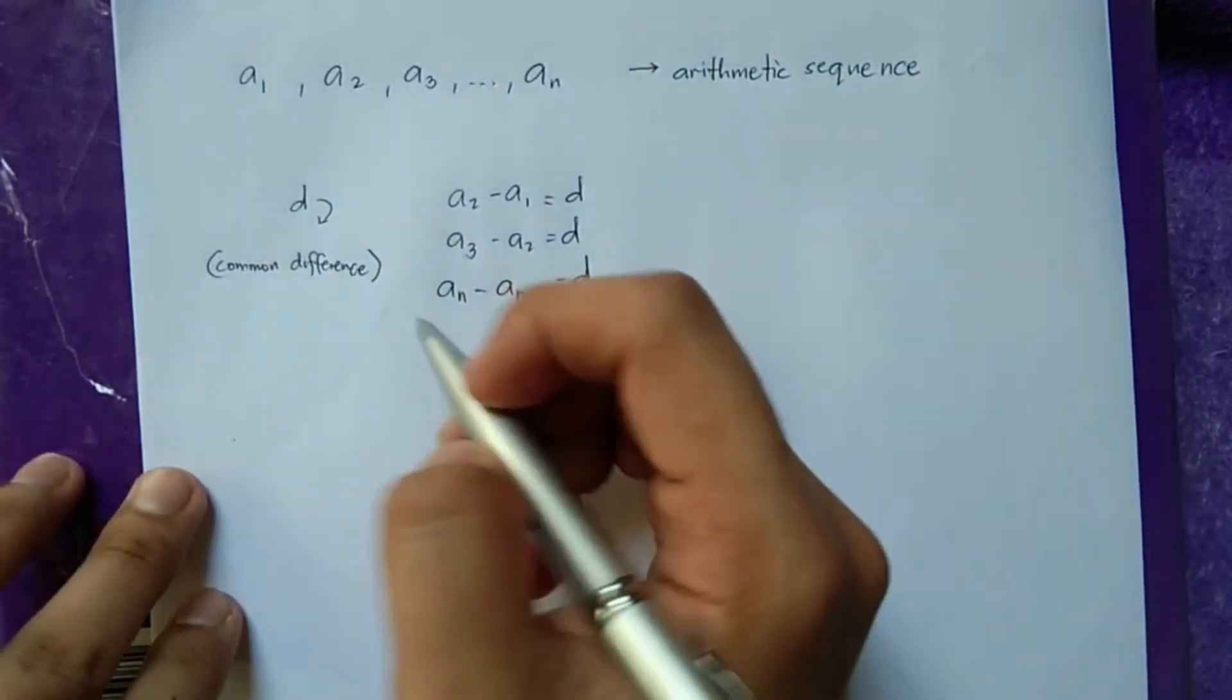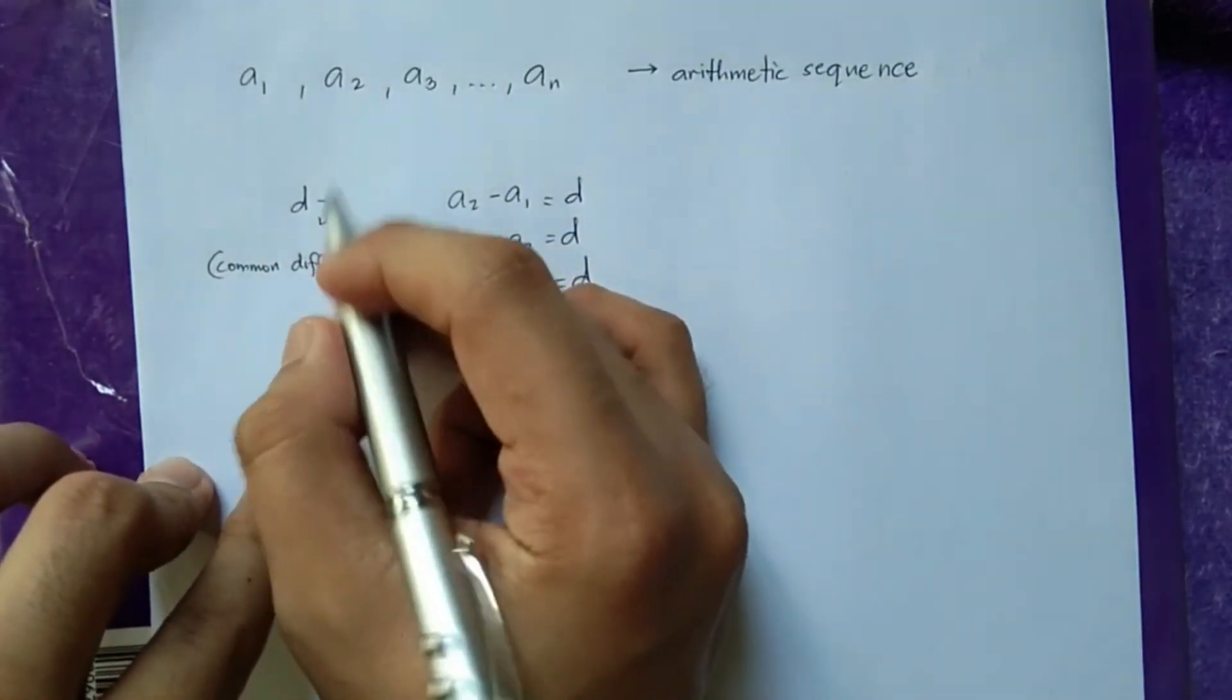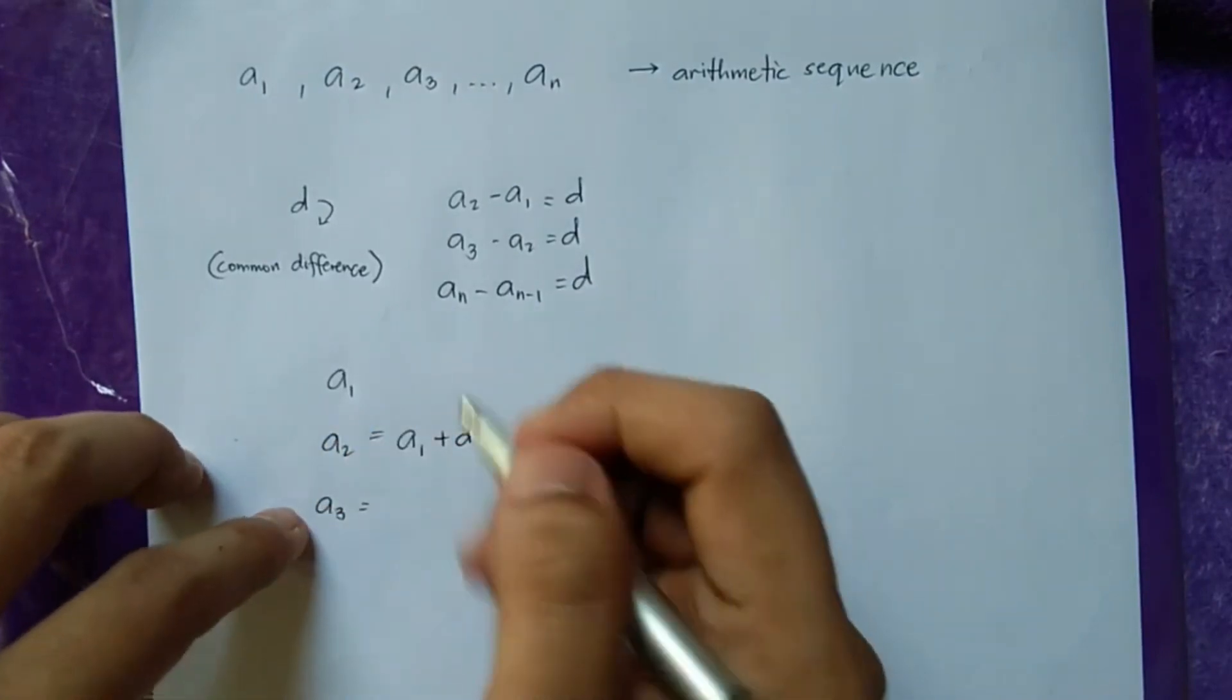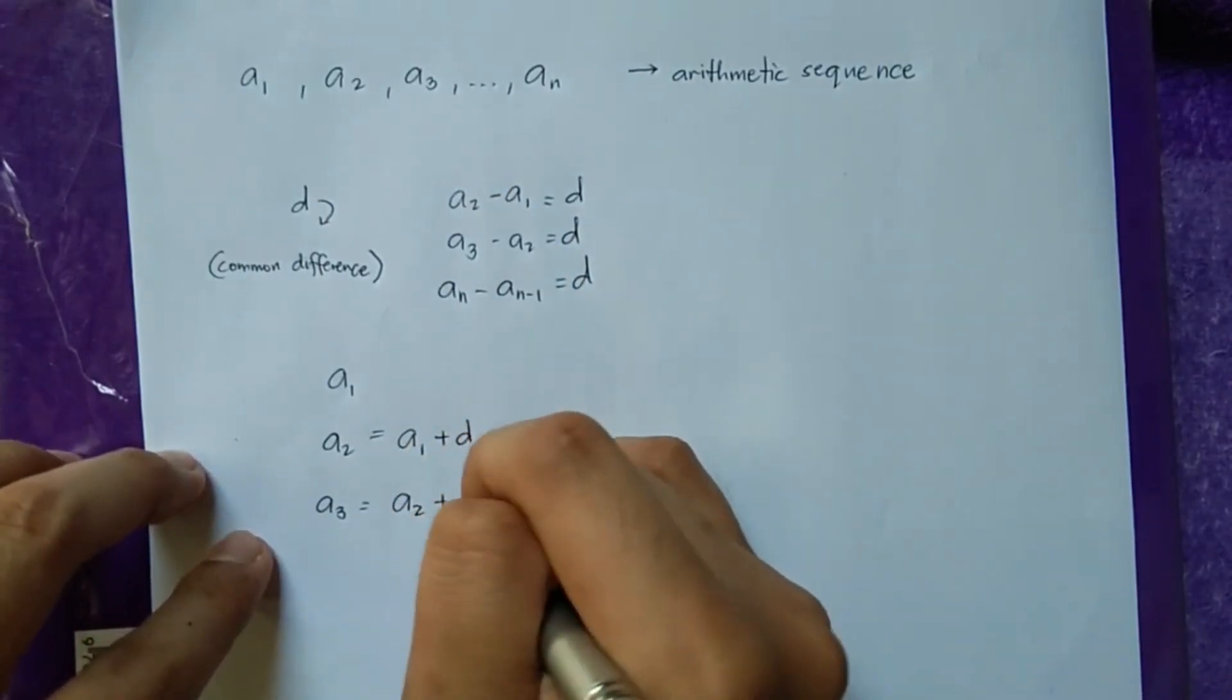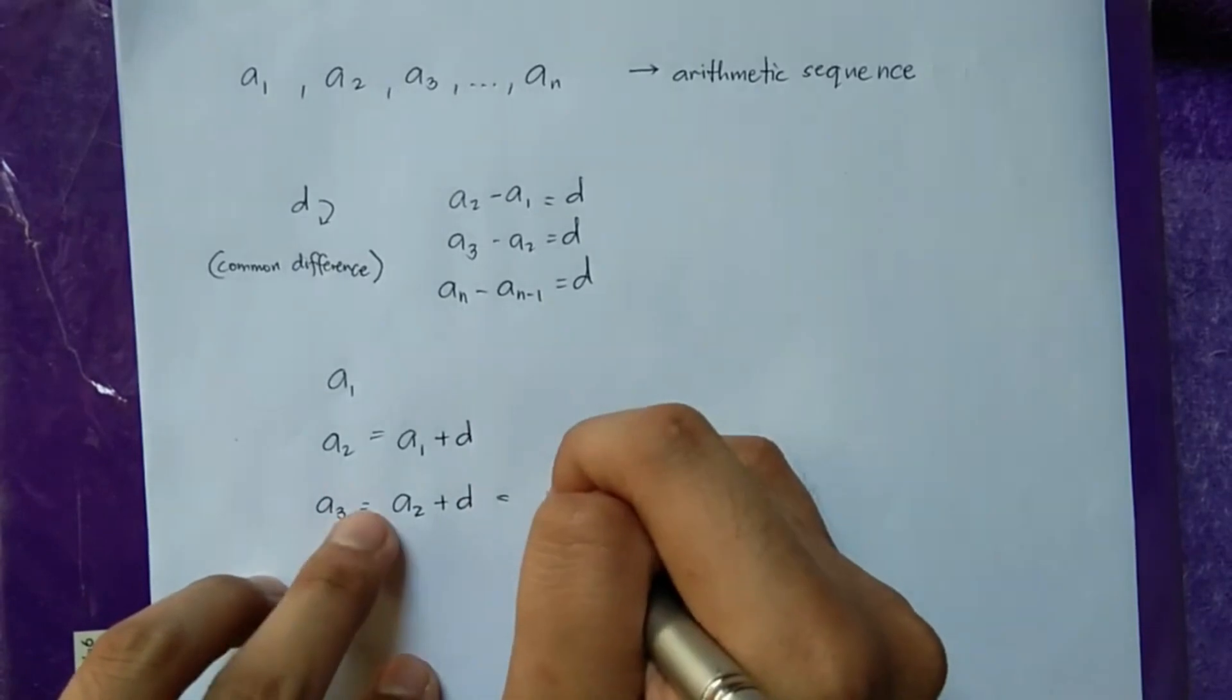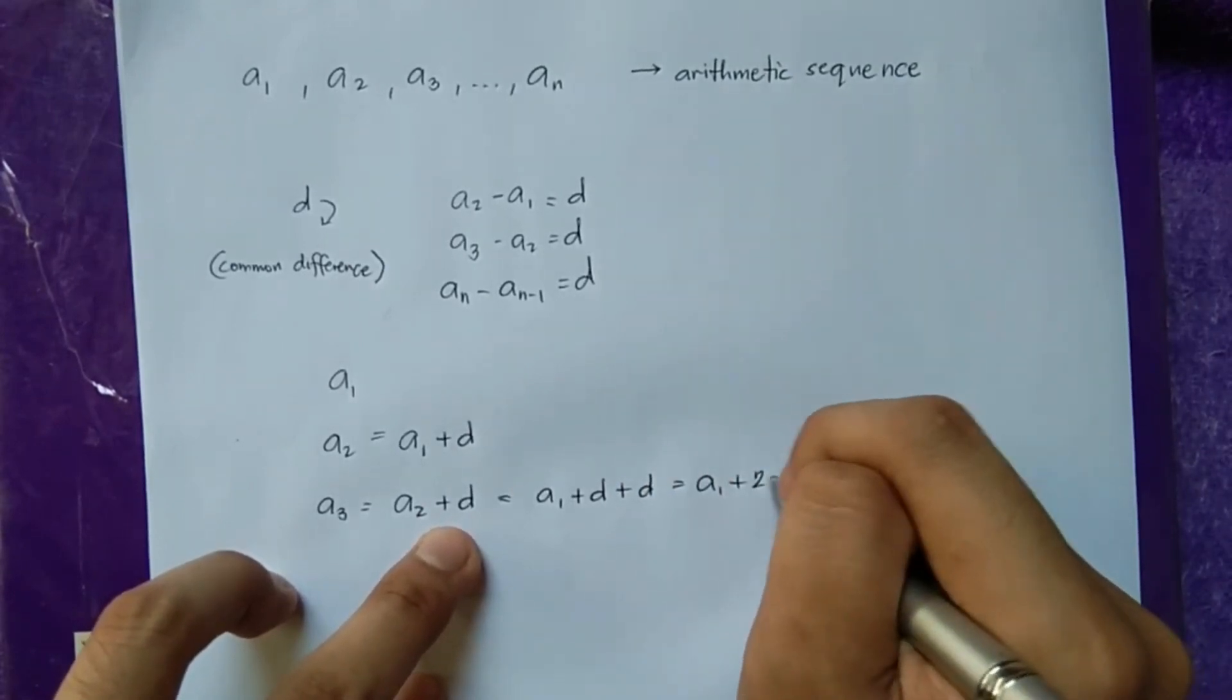Now given that the first term is a₁, to know a₂ or the second term, we need to add the common difference by the preceding term. So that is the same with a₁ plus d. a₃, you need to add the common difference by the preceding term. So that would be a₂ plus d. Take note that a₂ is also the same as a₁ plus d. So this would also mean a₁ plus d plus the common difference again will give you a₁ plus 2d.